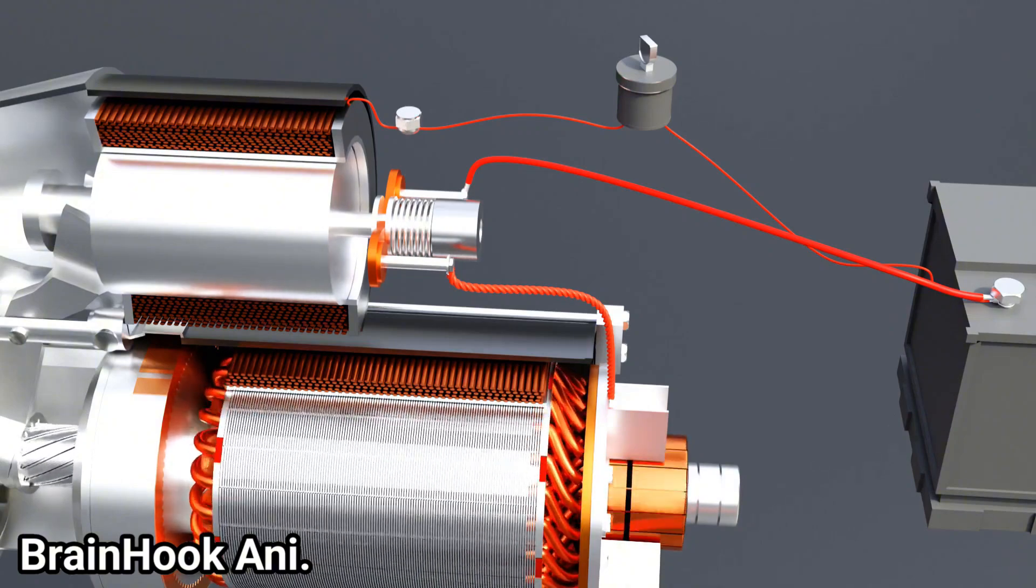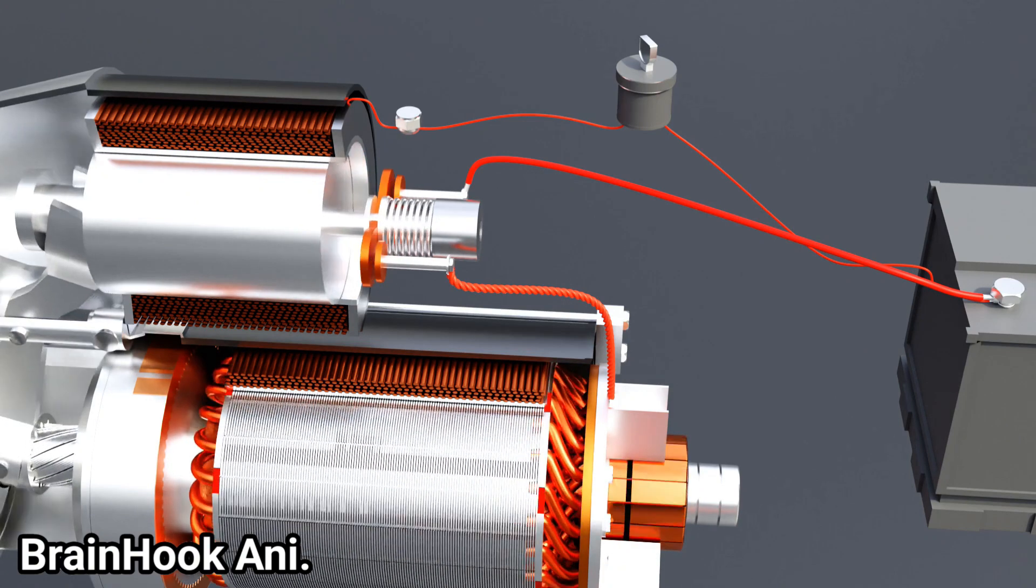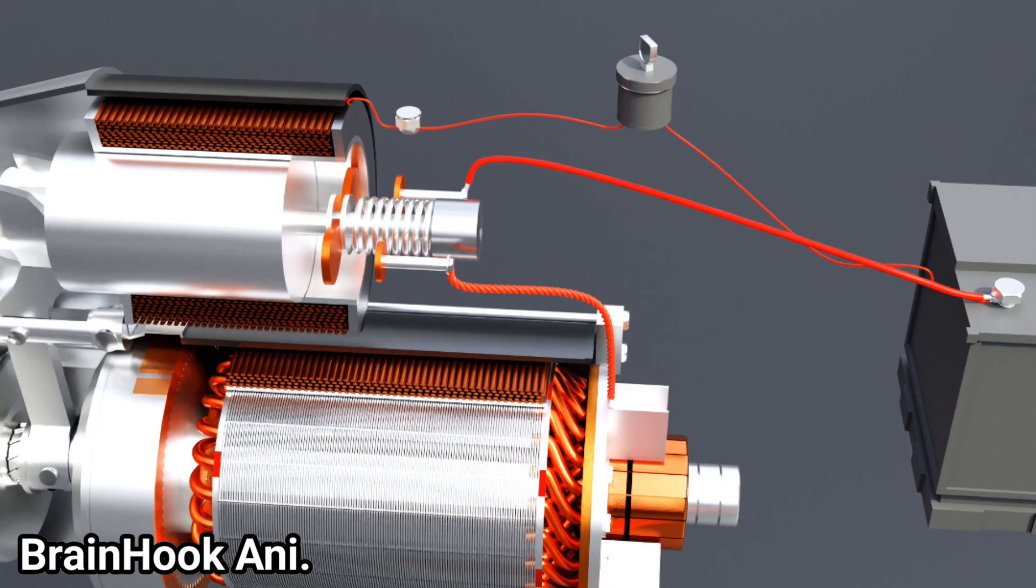When the current to the solenoid is turned off, the core returns to its original position under spring pressure, and the motor is disconnected from the battery.